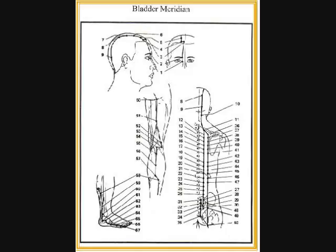UB51: abdominal pain, constipation, abdominal mass. UB52: nocturnal emission, impotence, enuresis, frequent urination, dysuria, irregular menstruation, pain in the back and knee, edema. UB53: borborygmus, abdominal distension, pain in the lower back and urea.